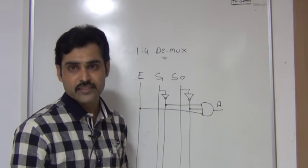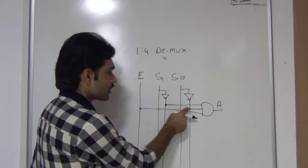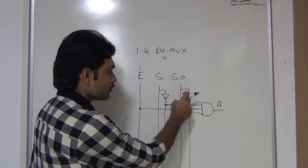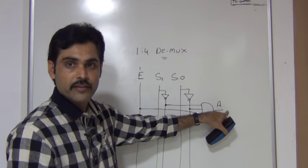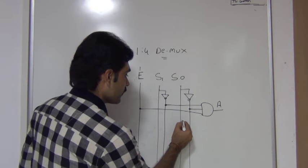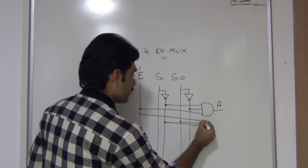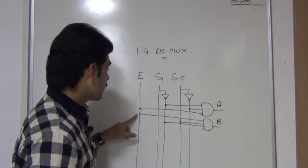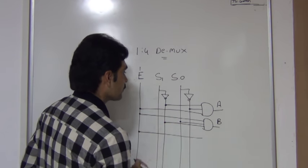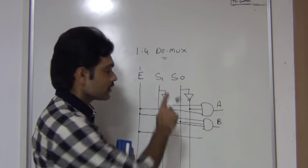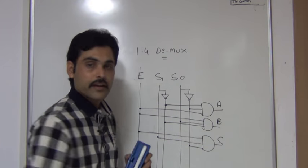The output of that AND gate I am calling as A. If you apply 0, 0 to the selection lines, through the NOT gates you will get 1, 1, and E is already 1. So 1 AND 1 AND 1 — this AND gate output is 1, and you will get output from line A. Similarly, for selection lines 0, 1, take the connection from S0, S1 bar, and E — these three connected to AND gate B. When selection lines are 0, 1, output comes from this AND gate. In the third case, take E; selection lines should be 1, 0 — take connection from S1 and S0 bar, and this AND gate output is C.